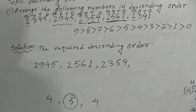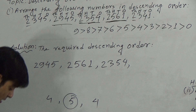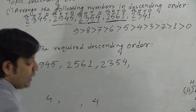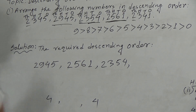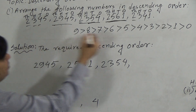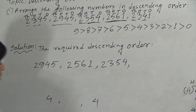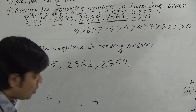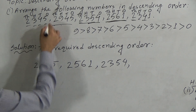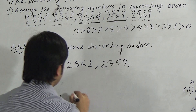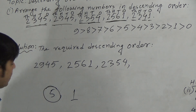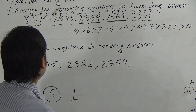Two numbers remain: 2,345 and 2,341. Between these two, the thousands, hundreds, and tens positions are all the same — 2, 3, and 4 respectively. So we need to compare the ones place. The ones place of 2,345 is 5 and the ones place of 2,341 is 1. 5 is the greatest, so the number containing 5 in the ones place is larger.